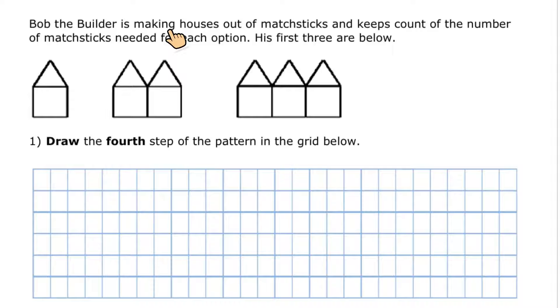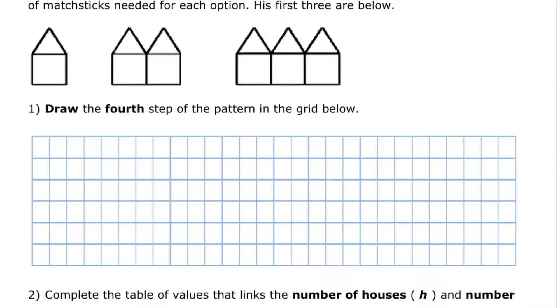Bob the Builder is making houses out of matchsticks and keeps count of the number of matchsticks needed for each option. His first three are below. So you can see he's got one house, two houses, and then three houses. The next one's going to have four houses. Draw the fourth step of the pattern in the grid below.